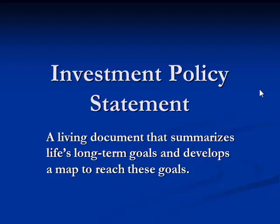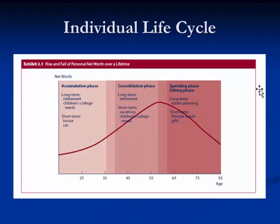Now let's get into the statement. The first thing to know is that individuals tend to follow a life cycle. This life cycle is graphed out with net worth on the y-axis and age on the x-axis. This represents a typical person — obviously not everybody fits this mold, but it's nice to think about as maybe where you want to go.